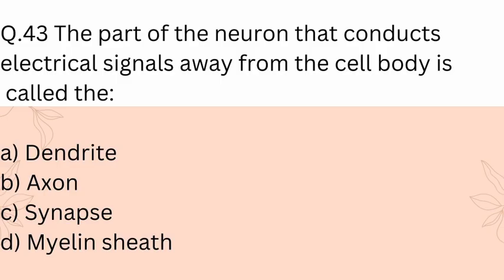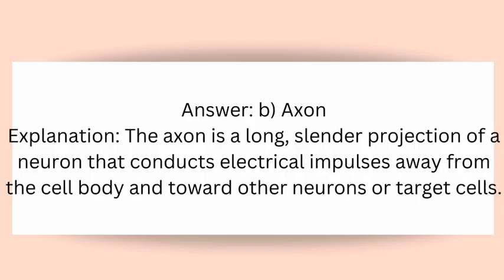Question 43: The part of the neuron that conducts electrical signals away from the cell body is called the? A) Dendrite, B) Axon, C) Synapse, D) Myelin sheath. Answer: B) Axon. Explanation: The axon is a long, slender projection of a neuron that conducts electrical impulses away from the cell body and toward other neurons or target cells.